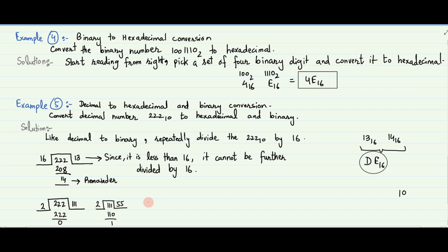Example 5 is decimal to hexadecimal and binary conversion. The decimal number 222 base 10 is converted to hexadecimal and binary. To convert to hexadecimal, work from the right and repeatedly divide the number by 16; the remainder goes in each column. 222 divided by 16 equals 13, with remainder 14 base 16. 13 base 16 goes in the 1's column, and the remainder 14 cannot be further divided by 16, so it goes in the 16's column. Hence, the answer is DE base 16, which is the hexadecimal equivalent of 14 and 13. Decimal to binary conversion is already explained in Example 2, and the first two steps are shown here for the viewer to begin with.